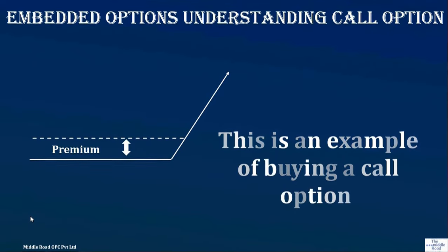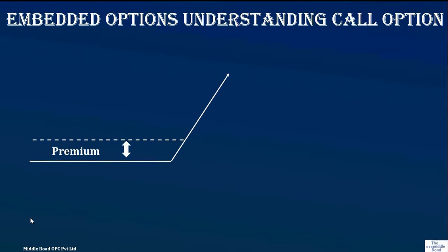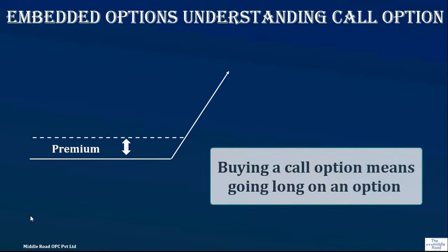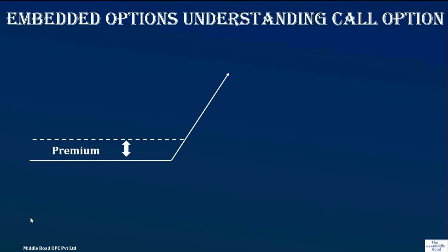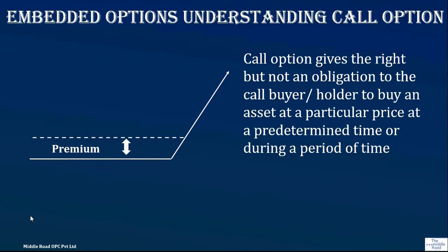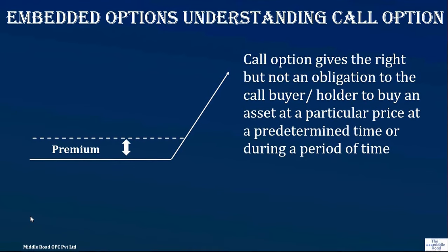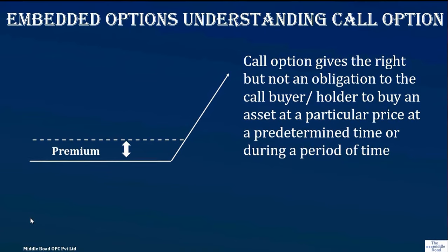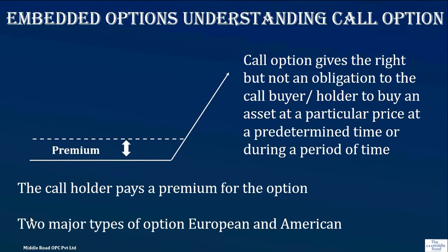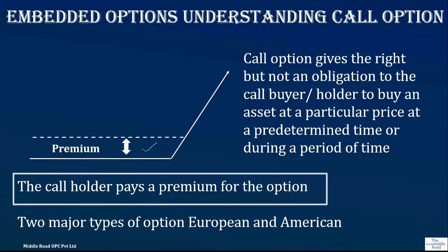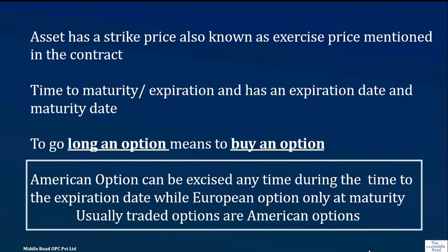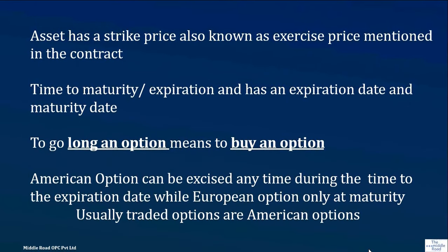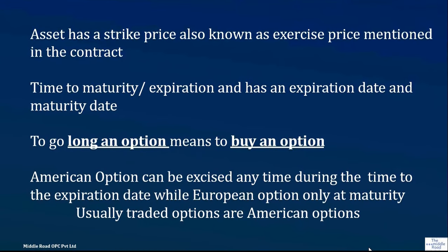Before discussing callable and non-callable bonds, we need to understand what a call option means. A call option gives the right, but not the obligation, to buy an asset at a predetermined price at a certain time or during a period of time. For this right, the call holder pays a premium. There are two major types of options: European and American — we will not be discussing exotic options. The exercise price is also known as the strike price — that is the price at which you buy the asset.